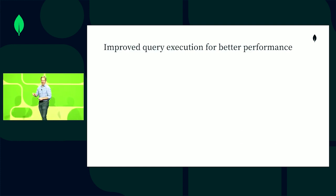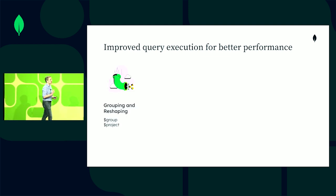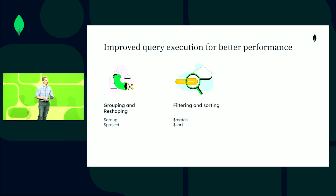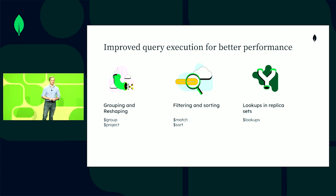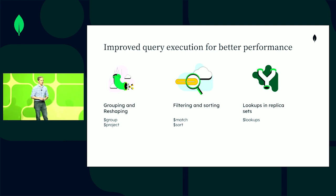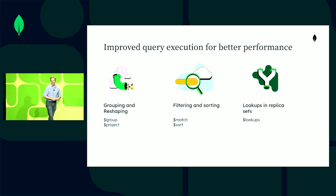The second major performance improvement is our new query engine — a multi-year effort to deliver the next generation of query performance, extensibility, and efficiency. It runs for nearly every type of workload: grouping and reshaping, filtering and sorting, $lookup, and most aggregation pipelines. The performance improvements are significant: up to 50% reduction in latency for grouping and reshaping operations, nearly 90% improvement in latency for $match and $sort, and $lookup is orders of magnitude faster.